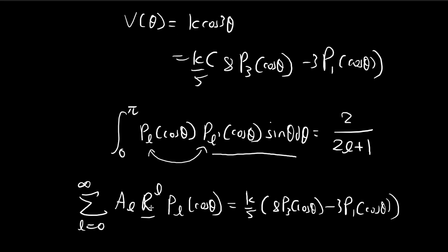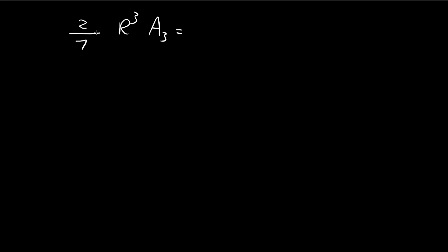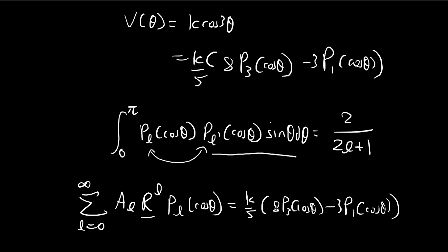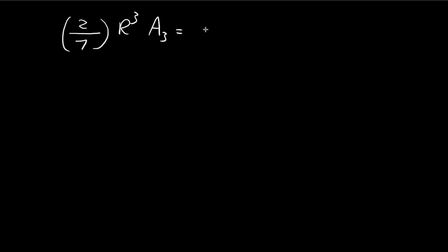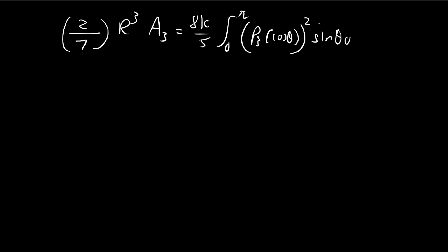For A3, we do essentially the same thing. On the left-hand side we have A3 times R³, and then the integral of P3²(cosθ) sinθ from 0 to π, which gives 2/(2L+1) = 2/7. The L=1 term disappears on the right-hand side since 1 ≠ 3. The 2/7 factors cancel, and A3 is determined from the 8/5 coefficient in a completely identical manner to the A1 calculation.